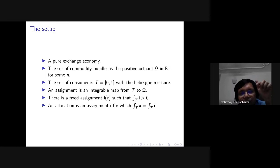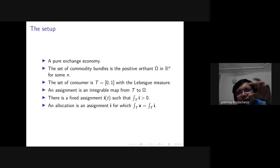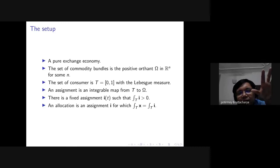One solution people have used is to show that results in continuum economies are limits of results for discrete economies as size grows. That way you can show the idealization is close enough to what you get with a finite economy. This work shows that in the idealized continuum limit you make technical assumptions but are not losing economically meaningful phenomena.